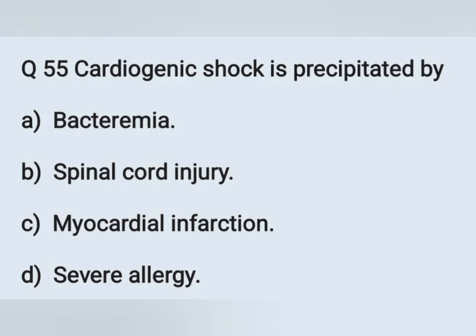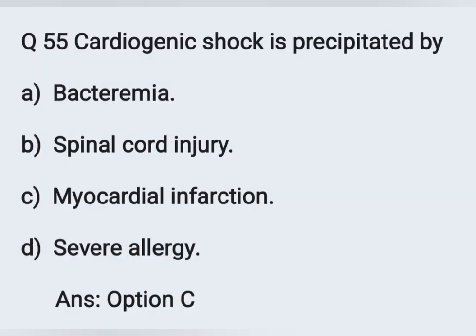Question number 55. Cardiogenic shock is precipitated by — Option A: Bacteremia. Option B: Spinal cord injury. Option C: Myocardial infarction. Option D: CBR allergy. The correct answer is myocardial infarction — Option C.